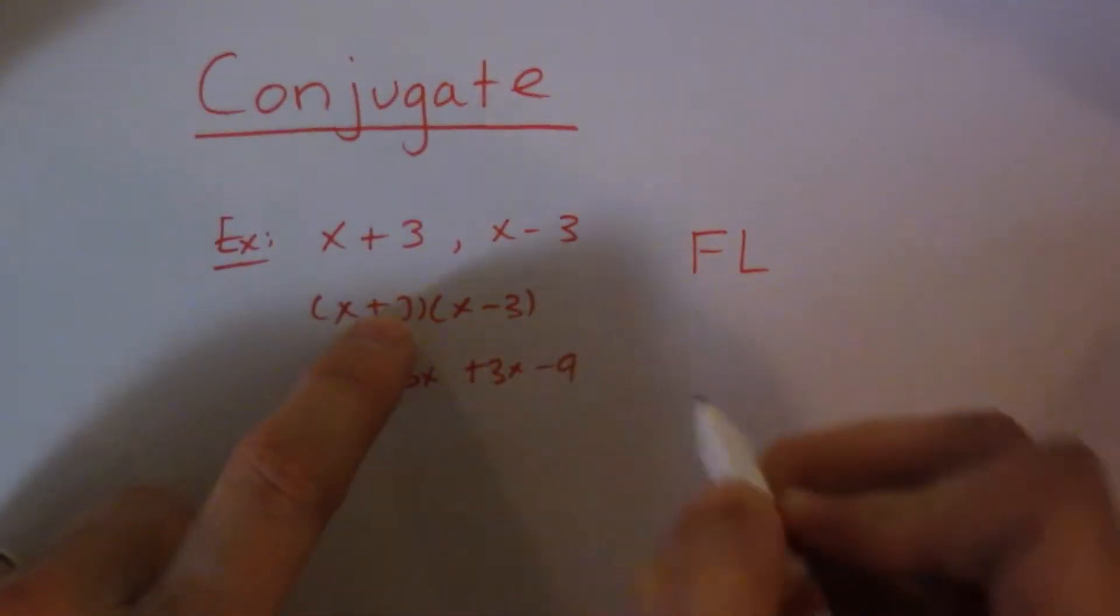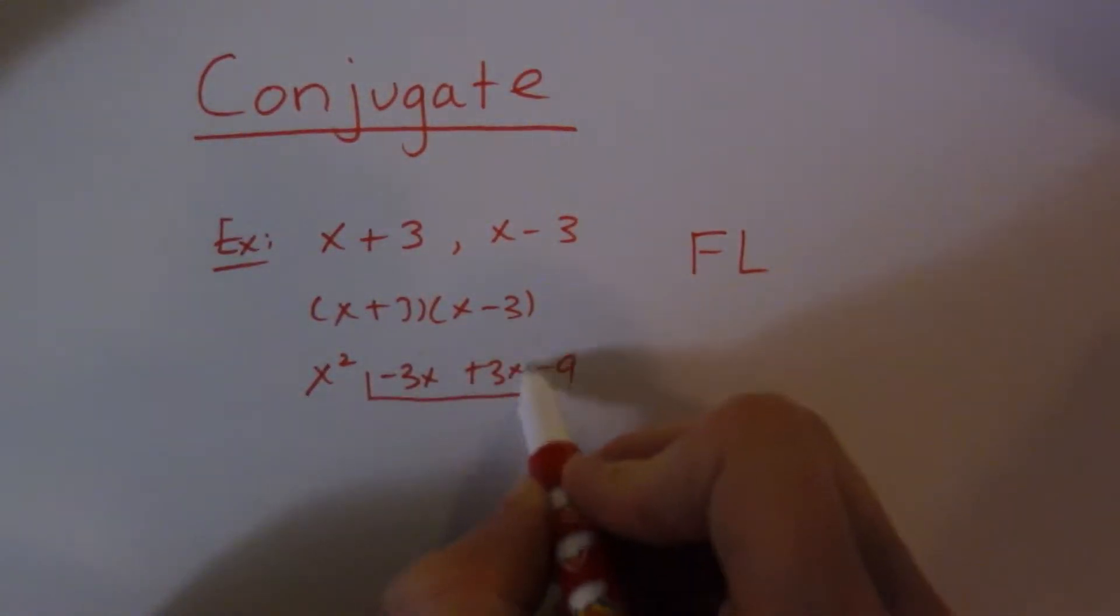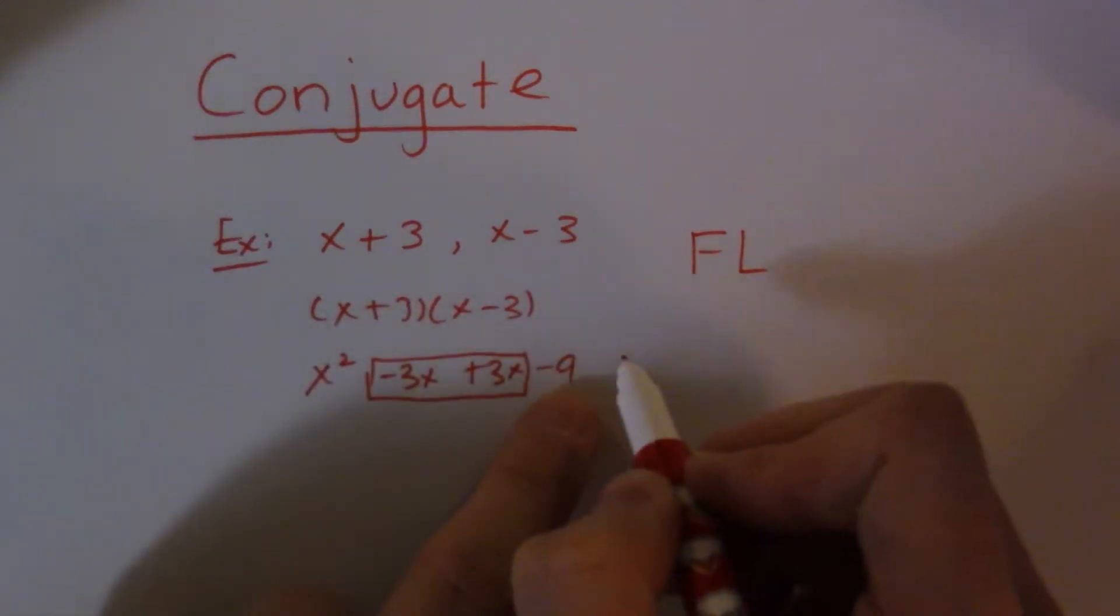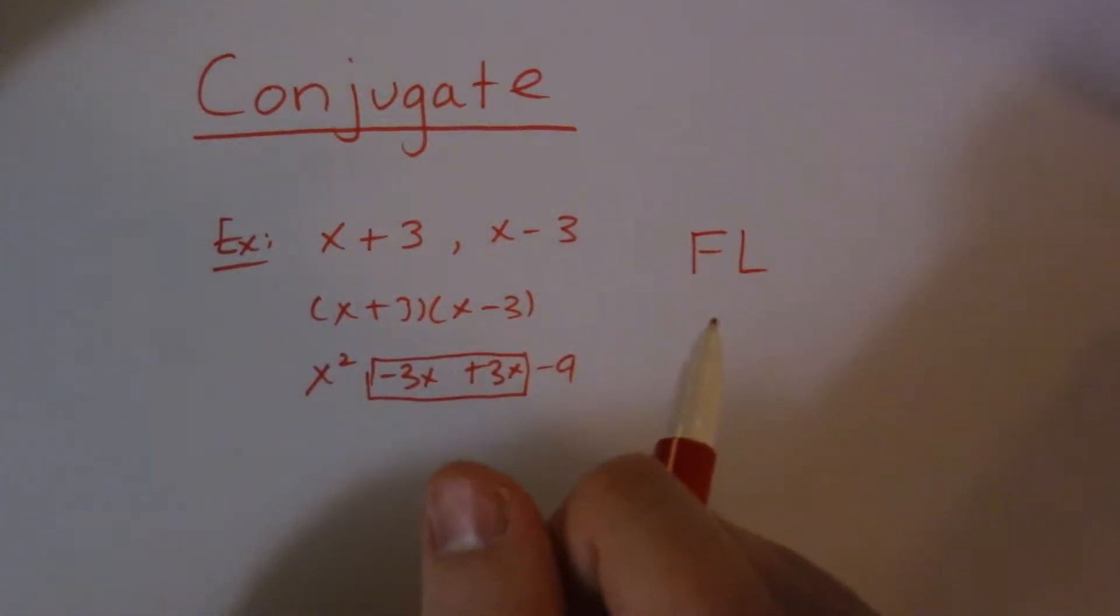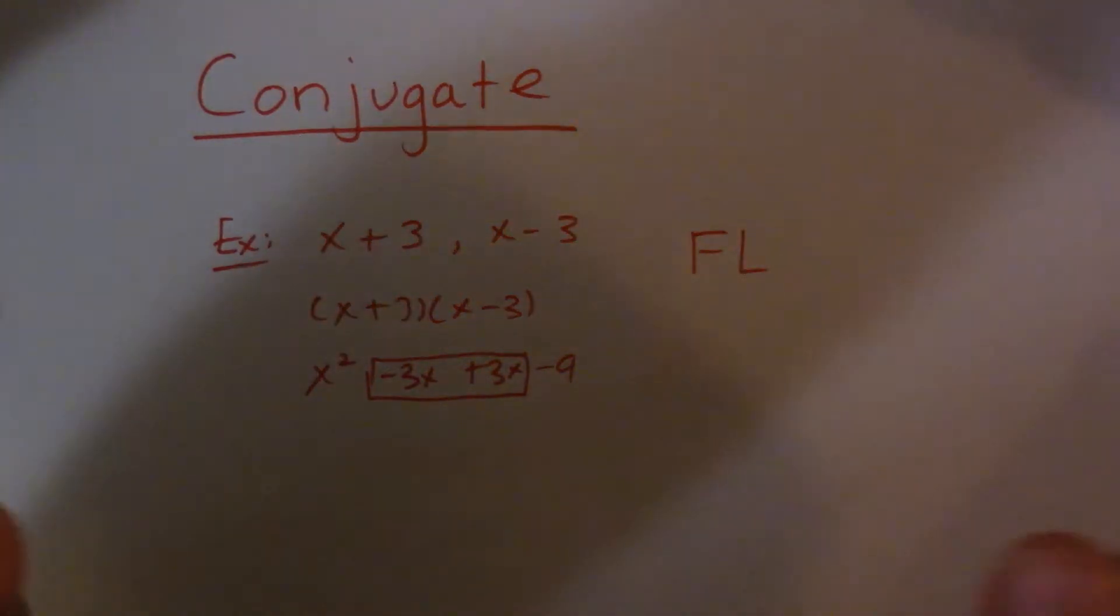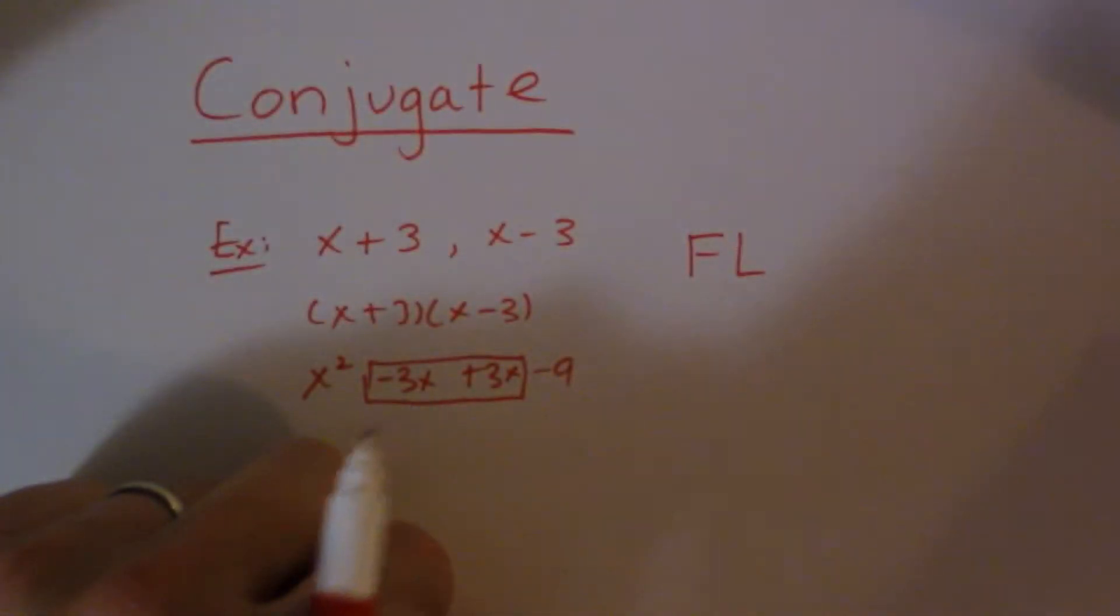Again, the first term and the last term is all you're going to be left with. So the middle two terms, the OI disappears. So for conjugate, we remember FLUH. So you might be asking yourself, when would I use this?